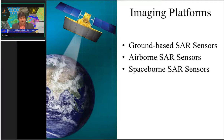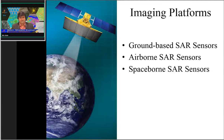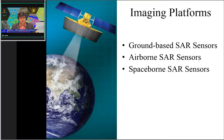Regarding imaging platforms, whether the sensor is monostatic or multi-static, there is a requirement of imaging platforms to carry the SAR sensors. There are three categories: ground-based sensors, airborne, and spaceborne. Remote sensing is possible with all three platform types, and we will look at one to two examples of each.